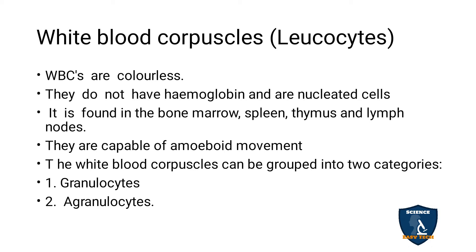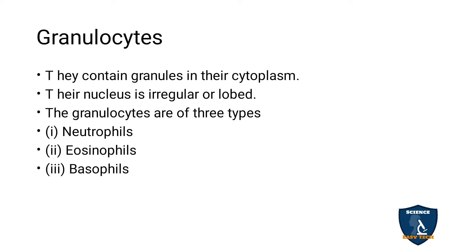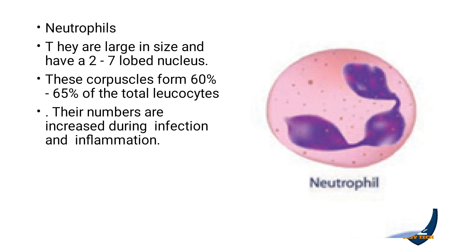White blood corpuscles can be grouped into two categories: granulocytes and agranulocytes. Granulocytes contain granules in the cytoplasm and the nucleus is irregular in shape. The granules are of three types: neutrophils, eosinophils, basophils.